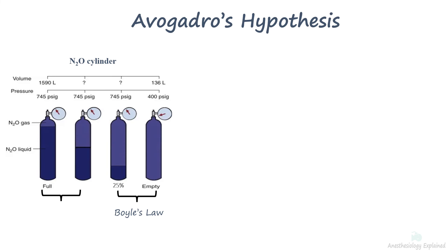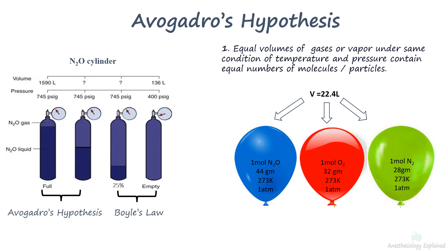The principle used is Avogadro's hypothesis. It states that equal volumes of all gases or vapor under same condition of temperature and pressure contain equal numbers of molecules. It means that if the temperature, pressure and volume are kept constant, any gas will contain same number of molecules.